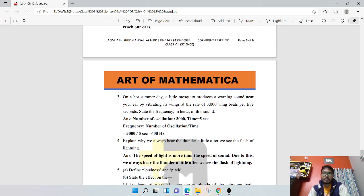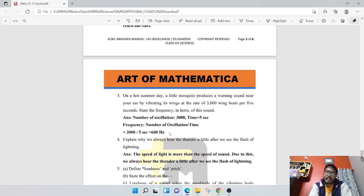On a hot summer day, a little mosquito produces a warming sound near your ear by vibrating its wings at the rate of 3000 wing beats per 5 seconds. State the frequency in hertz. Number of oscillations is 3000, frequency means number of oscillations per unit time, so 3000 divided by 5, that is 600 hertz.